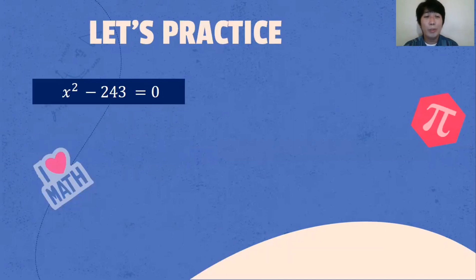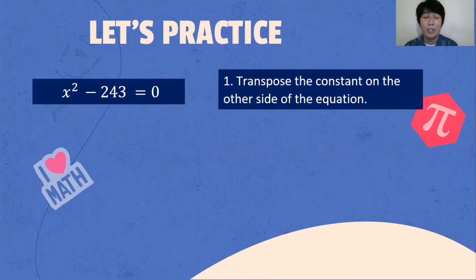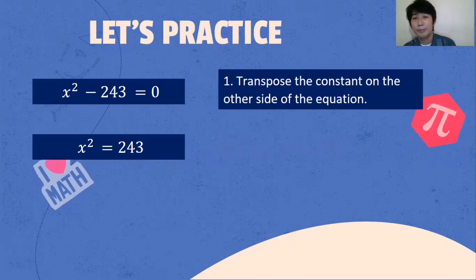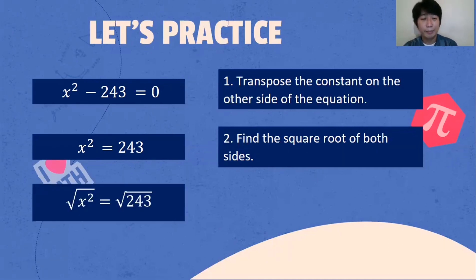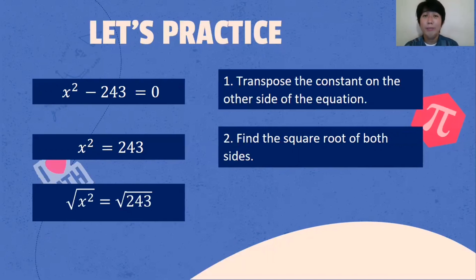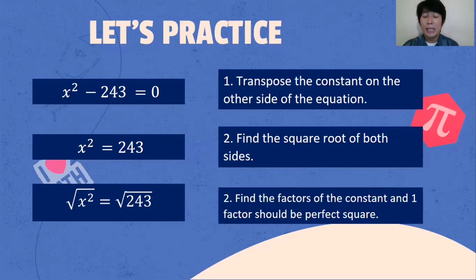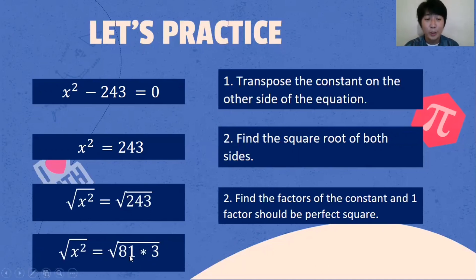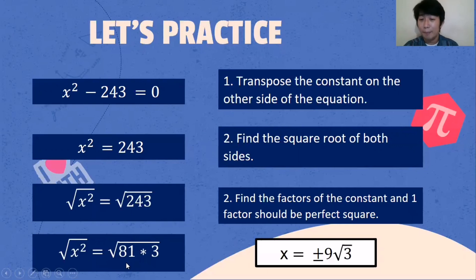Another example: X squared minus 243 is equal to 0. First step: transpose the constant on the other side. From negative 243, when you transpose it, the sign will be changed — that will become positive 243. Next: find the square root of both sides. X squared is a perfect square, but 243 is not. We find two factors where one is a perfect square: 81 multiplied by 3 is 243, and the square root of 81 is 9. So the answer is X is equal to positive and negative 9 square root of 3.